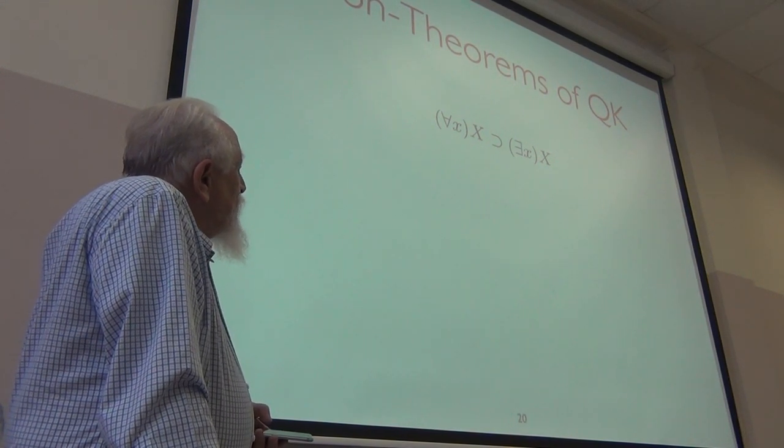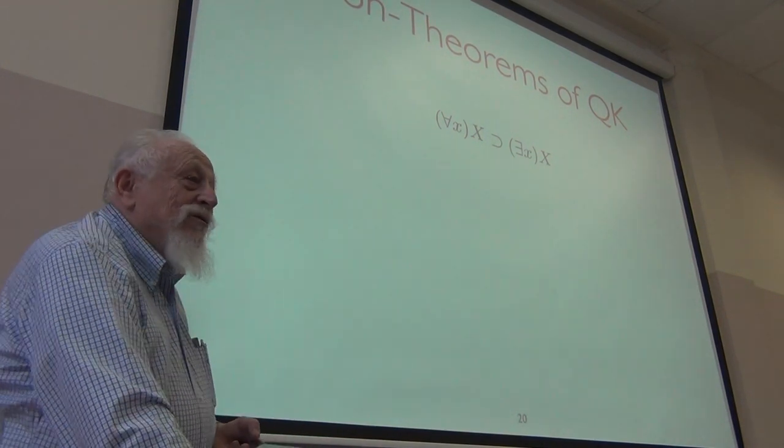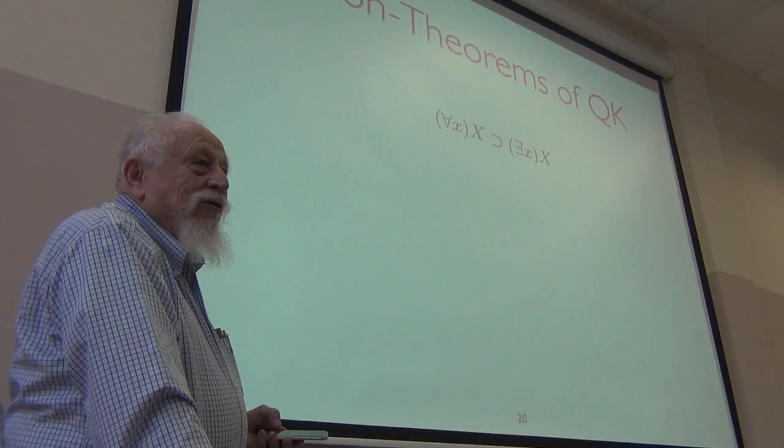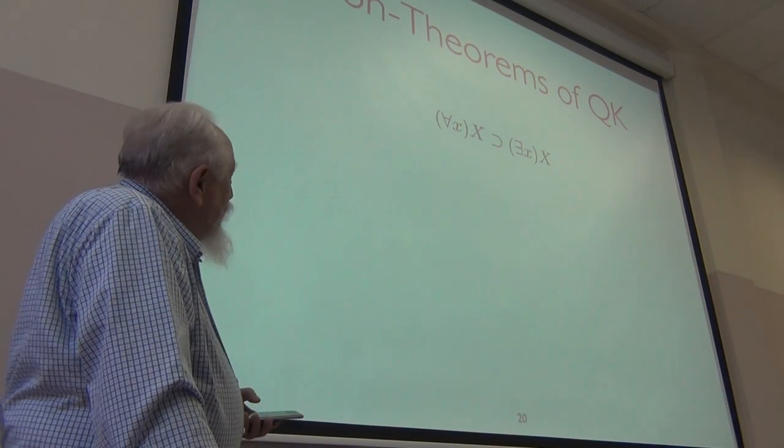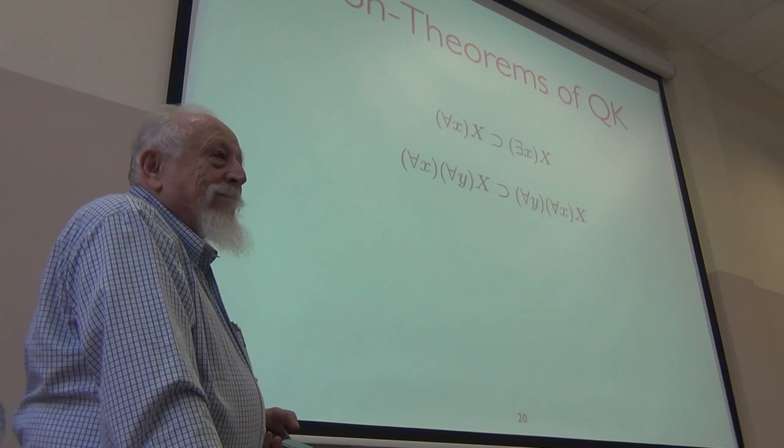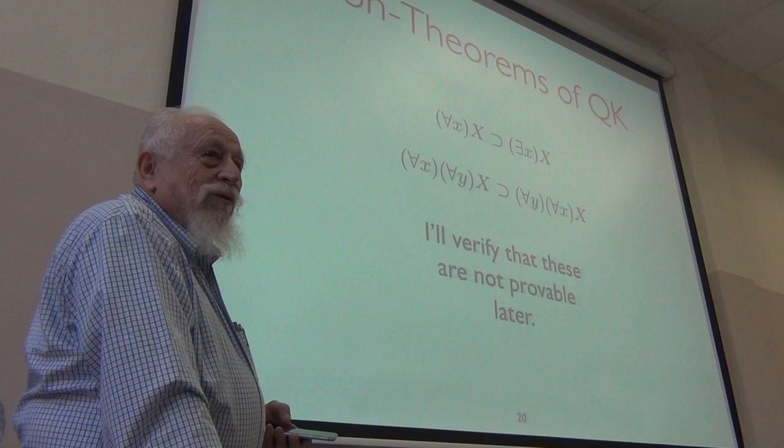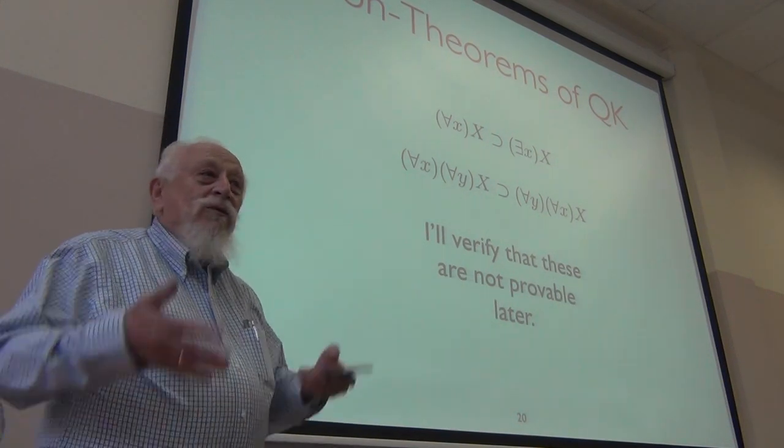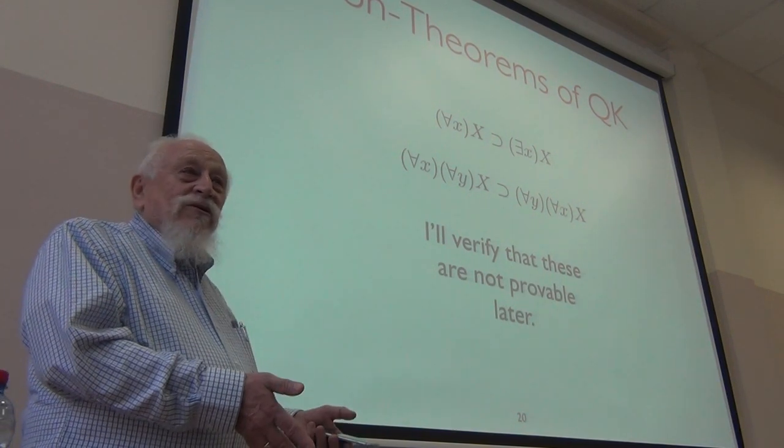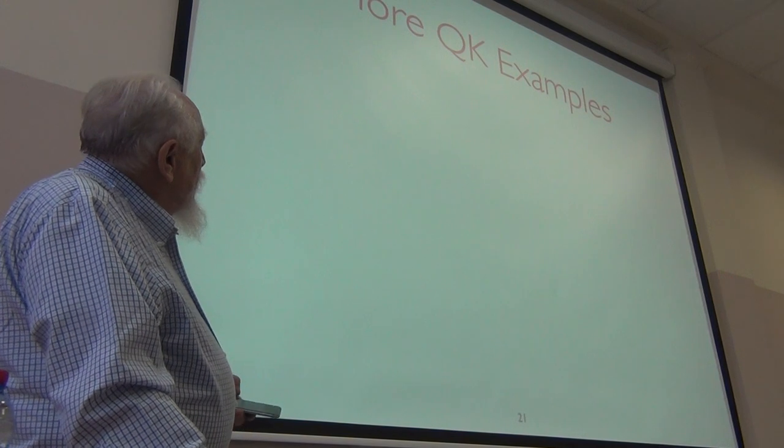But, non-theorems. Well, this is a non-theorem. For all X implies exists X. You should kind of expect it to be a non-theorem because in K you don't have box implies diamond. The question is how would you show it's a non-theorem of QK? Of course, failing to derive it is not good enough. Quantifiers don't commute. That's a little curious. In a little while, I'll verify these aren't proof of that. But, you understand in order to show something is provable and that you have an axiom system, you give proof. To show something is not provable, typically you provide a semantics and then provide a model where it fails. We're going to need a semantics.